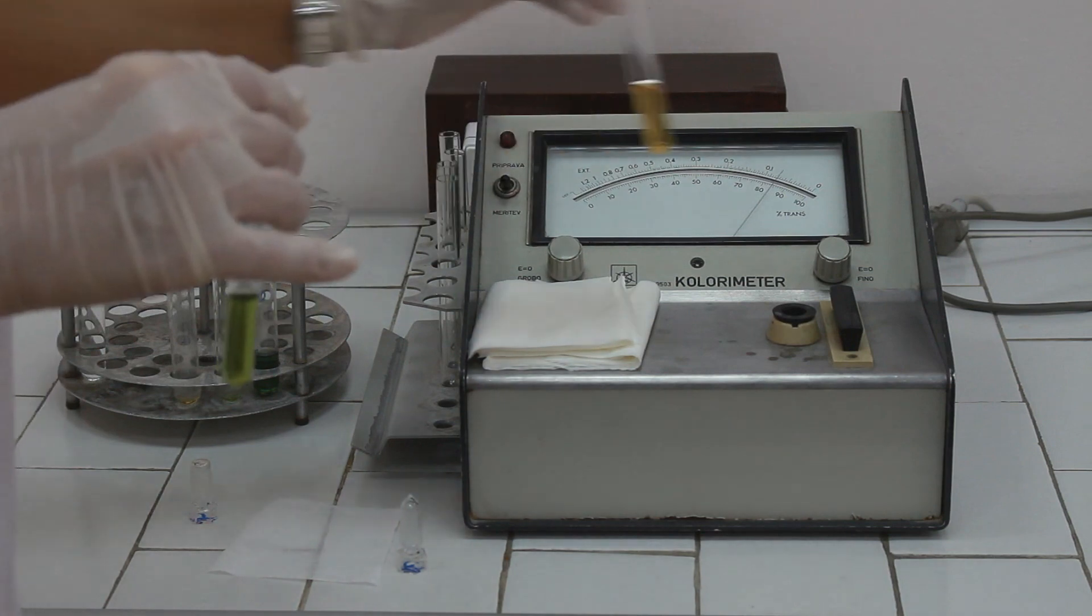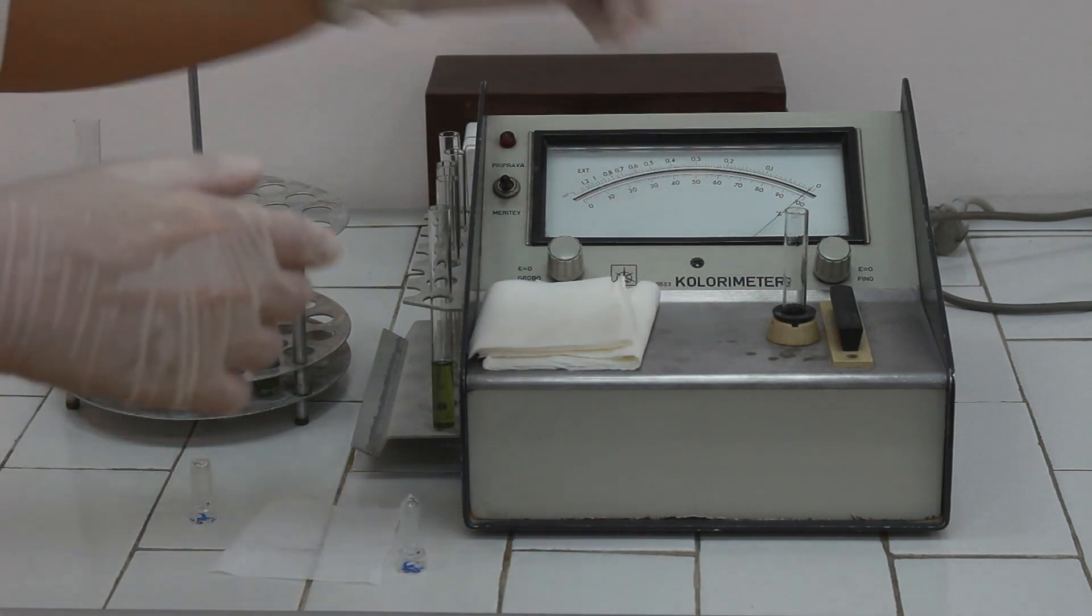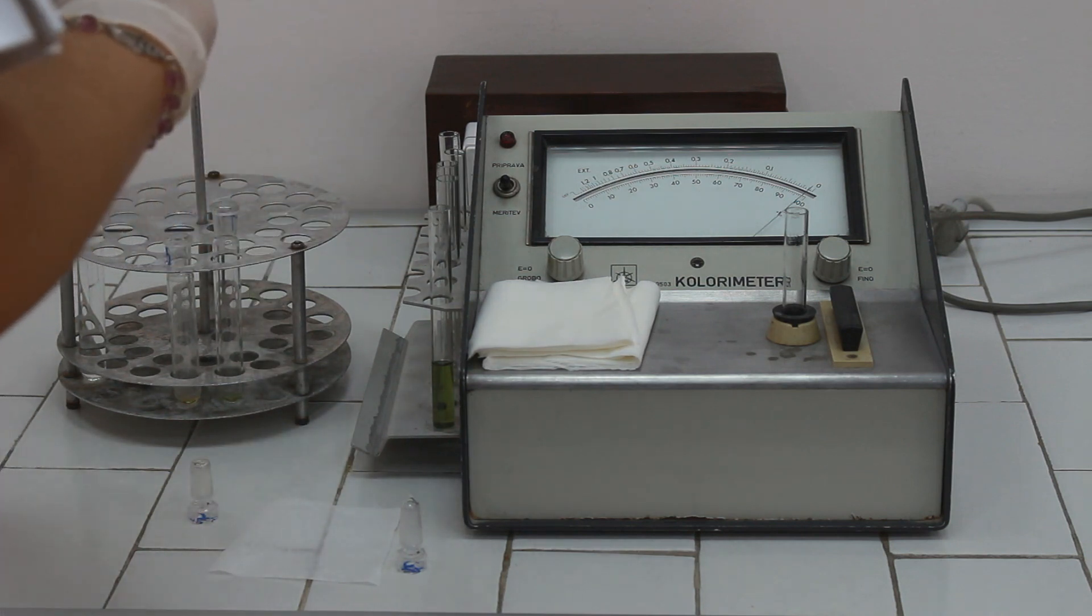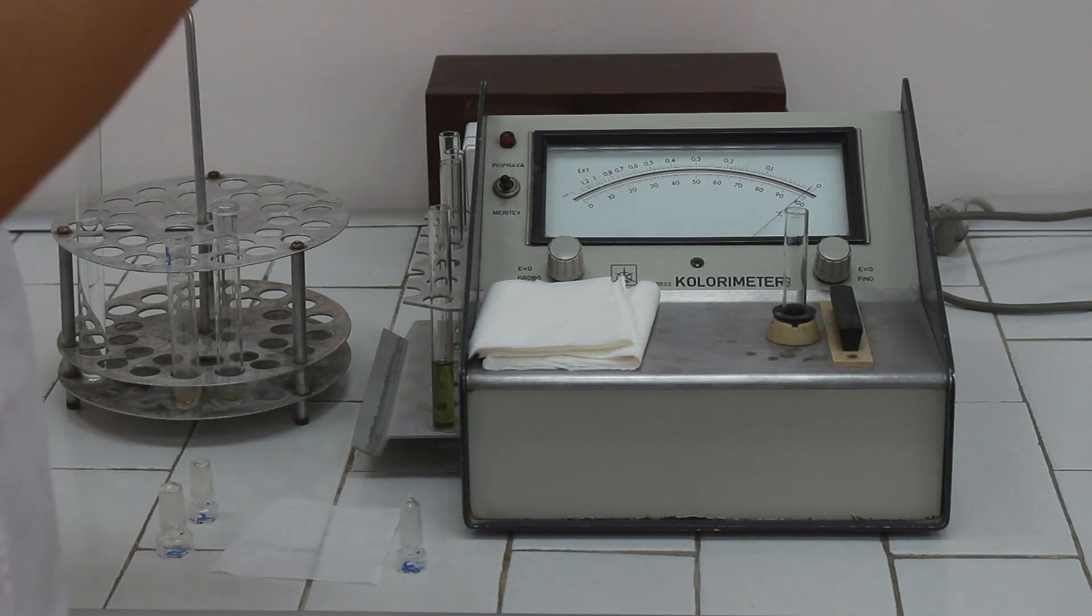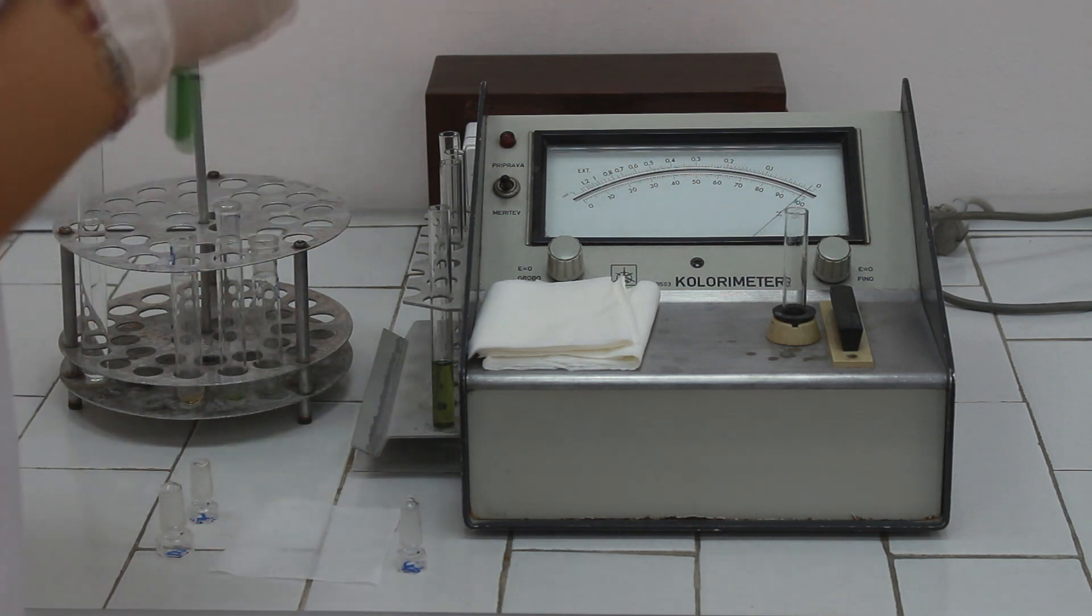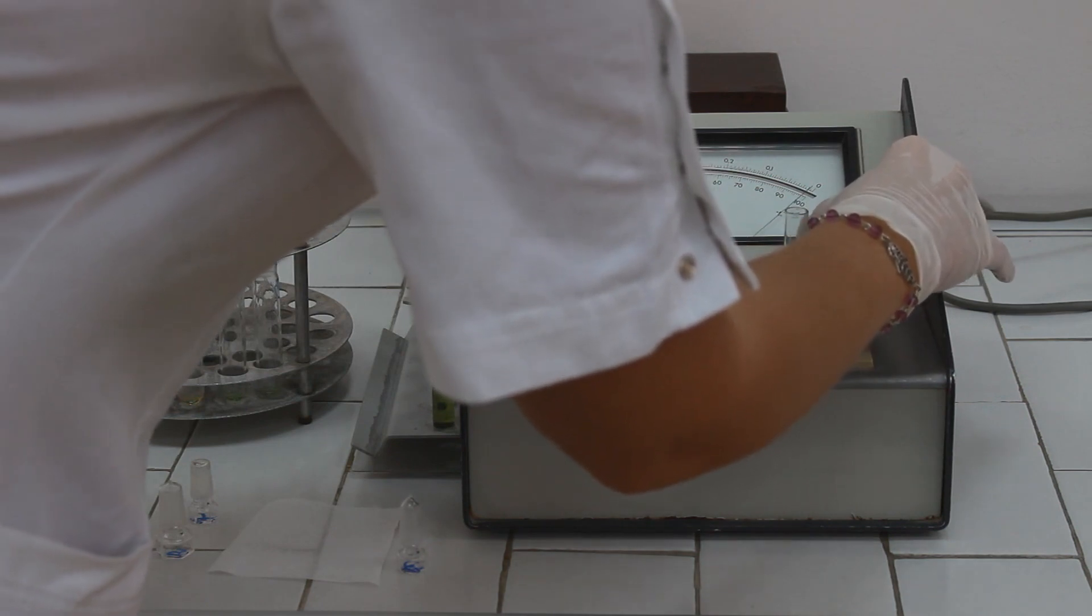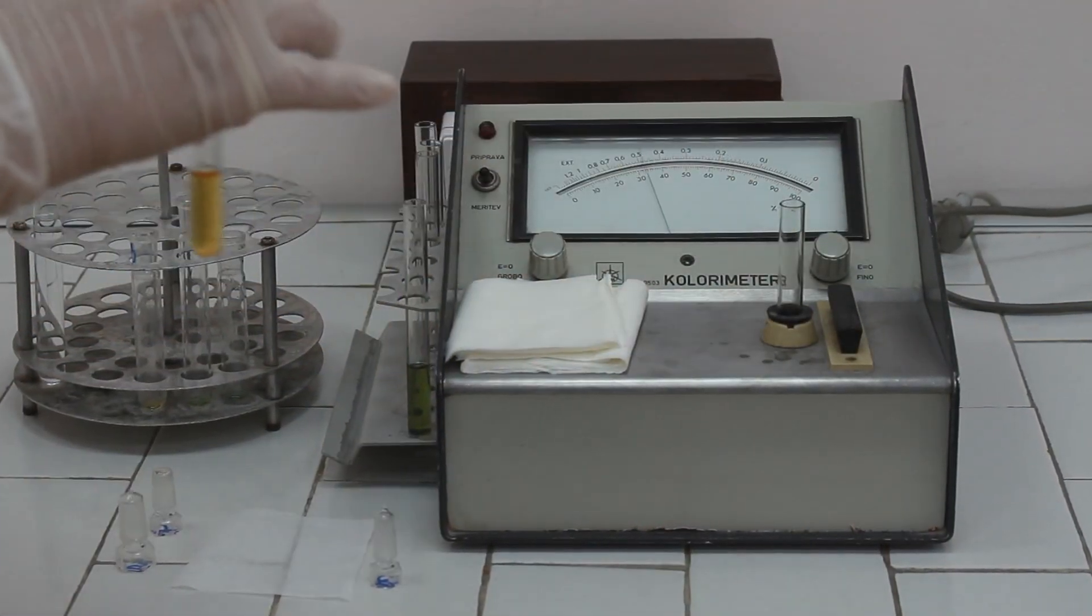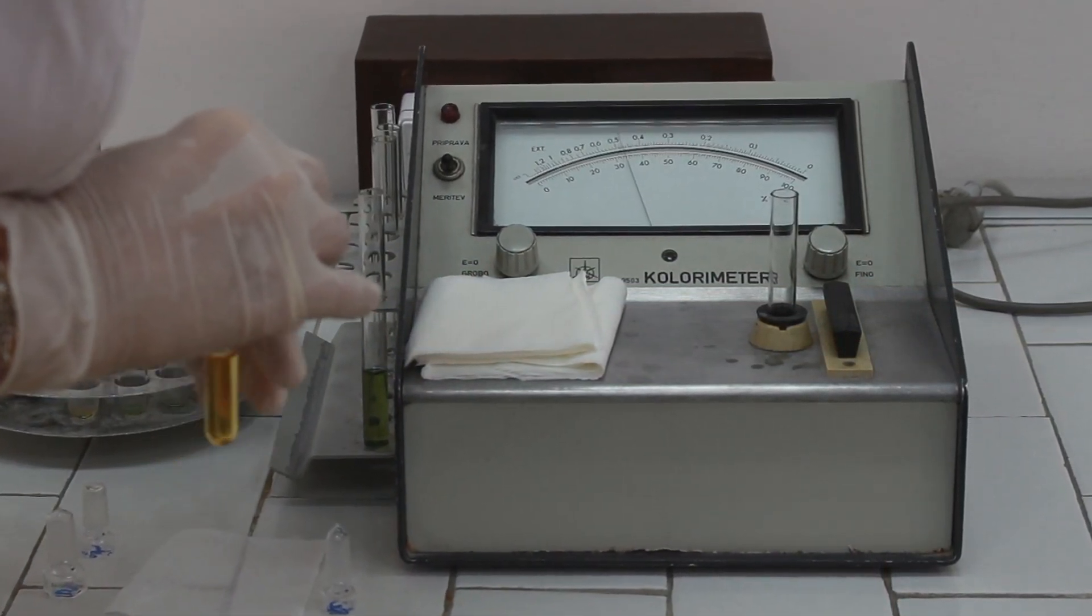Take out the test cuvette and put back the blank cuvette. If the zero of instrument is changed, adjust it again. Then, take the standard solution and pour it to another cuvette. Take out the blank and put the standard solution. Read the absorbance. The absorbance in this case is 0.48.